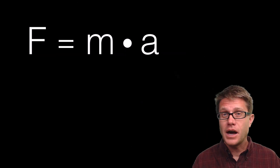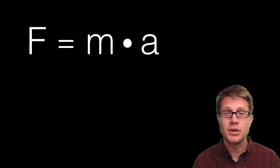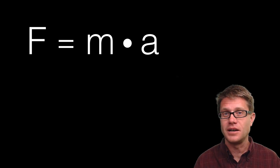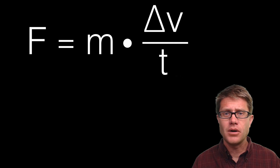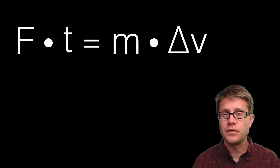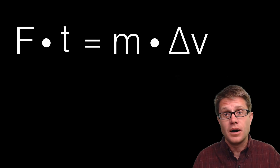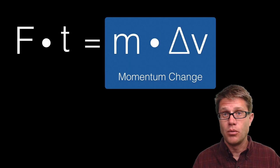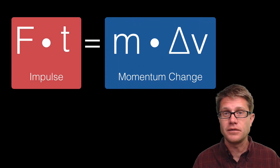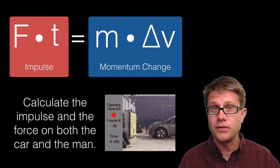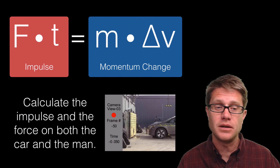To figure out how these two are related, it begins — like everything in physics — with Newton's second law: force equals mass times acceleration. Let's break down acceleration as the change in velocity over time. If we multiply both sides of this equation by time, we get the two subjects of this video: momentum change, which is mass times the change in velocity, on the right; and impulse, on the left. These are equivalent, so we can use this to solve really difficult problems.